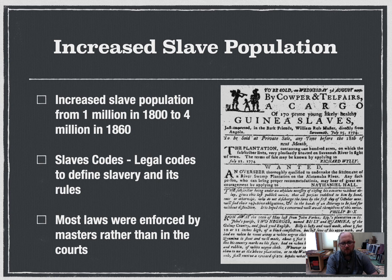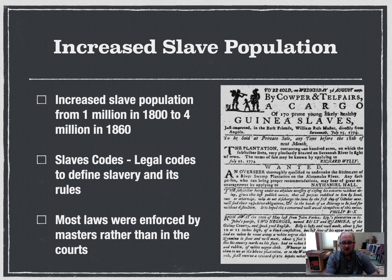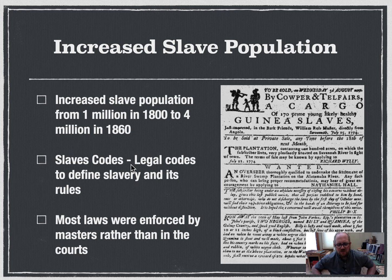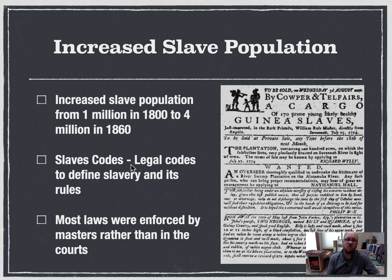As slave population increased — and especially compared to white population — many states got very close to half their population being slaves, with South Carolina and Louisiana actually over 50% for part of their statehood. To control slaves, stricter and more defined slave codes were created. The slave population increased from 1 million to 4 million in those 60 years, and so did the laws — basically to keep slaves on the plantation and prevent them from gaining rights that could lead to rebellions.